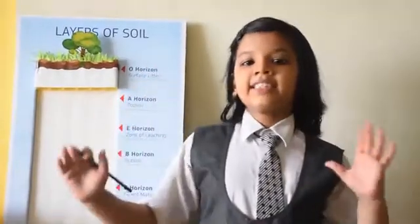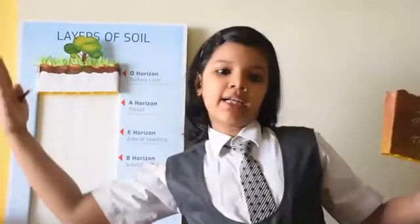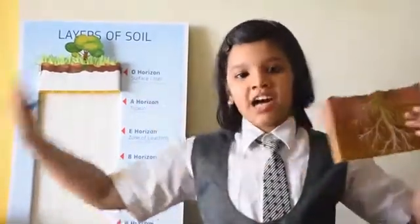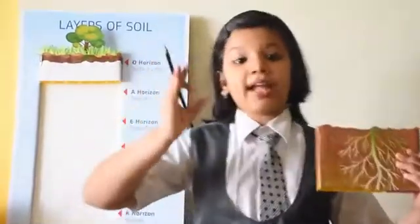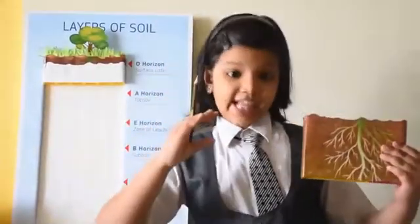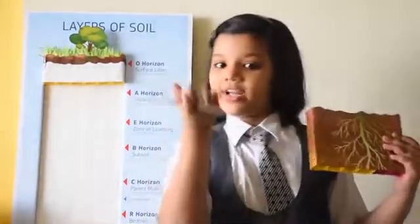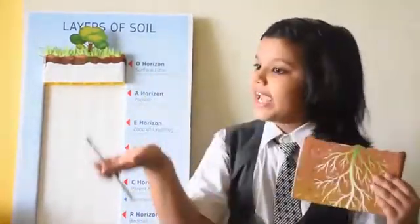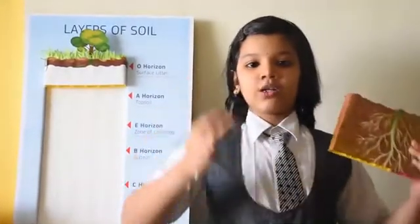The next layer is the A horizon, or topsoil. This layer is rich in organic material and is known as the humus layer. This layer consists of both organic matter and other decomposed materials. The topsoil is soft and porous to hold enough air and water.